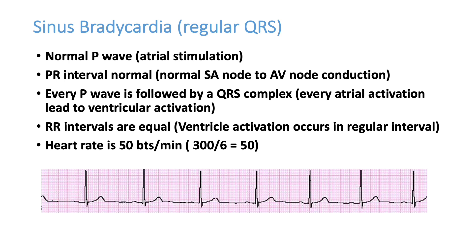Every P wave should be followed by a QRS complex; if not, there is a block. RR intervals should be equal. To calculate heart rate on ECG, use the formula: 300 divided by the number of large squares between two RR intervals. If six large squares are between two QRS complexes, the heart rate is 300 ÷ 6 = 50 beats per minute. If the ECG shows sinus rhythm with a low rate, the patient has sinus bradycardia.